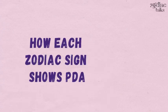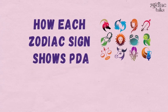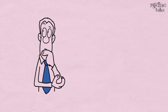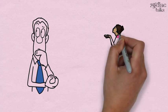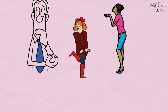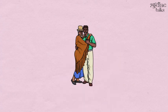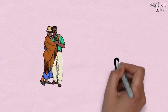How each zodiac sign shows PDAs. Are you into public displays of affection? Do you like it when your partner kisses you in public, or are you easily embarrassed? For some of us, PDAs such as kissing, hugging, or holding hands are like a declaration of love—telling the world that you belong to each other.